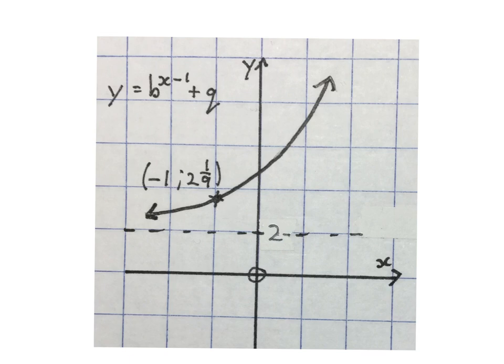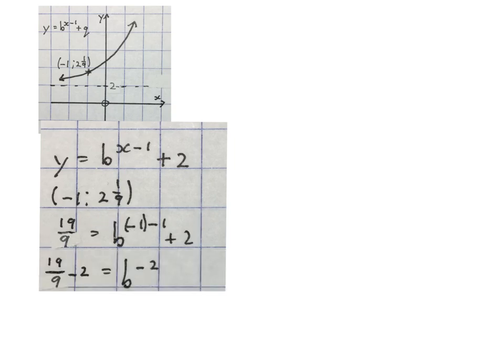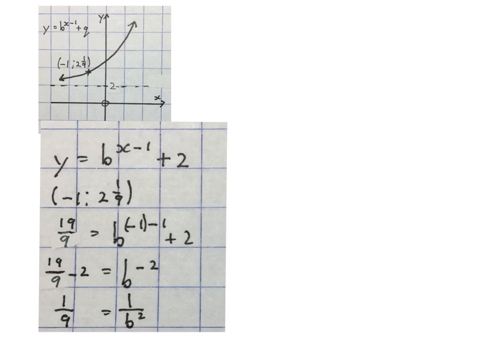The next function looks like this and they asked us to work out the equation. They helped us by giving us the formula, a coordinate on the graph, and the asymptote — telling us the asymptote passes through 2 on the y-axis. The first thing you do is write down the equation and substitute the asymptote in place of q, so it'll be plus 2. Then you look for coordinates on the graph and plug them into the formula.